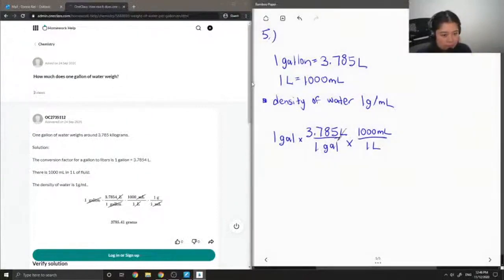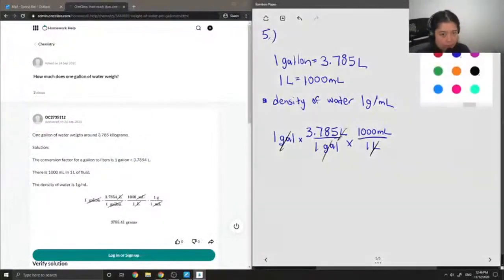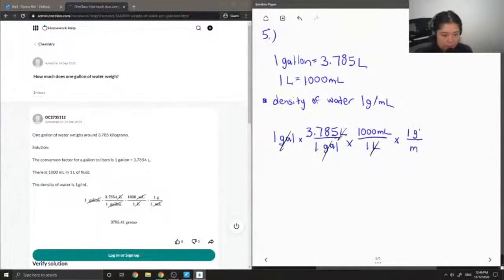Okay, so you can see that our liters will cancel out, our gallons cancel out. And just to show that I'm going to convert this to grams, I'm going to multiply by the density of water, which is 1 gram per milliliter.